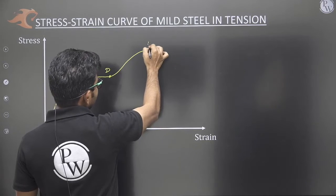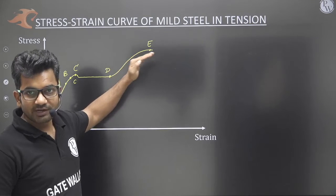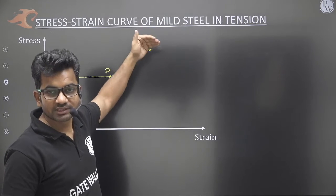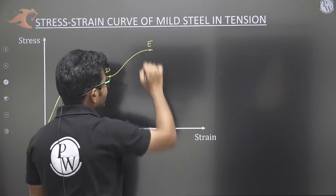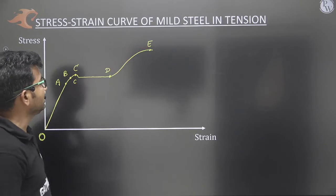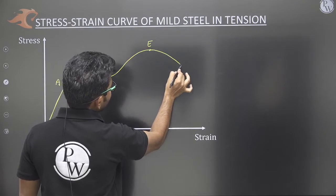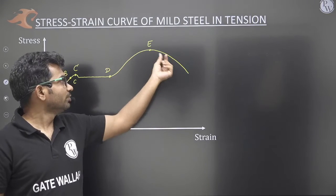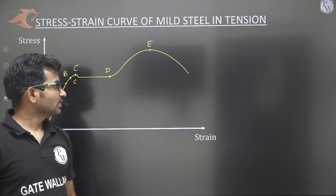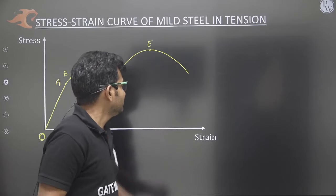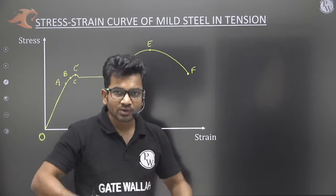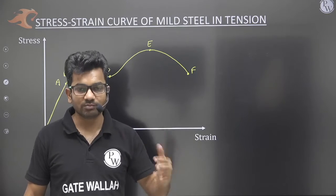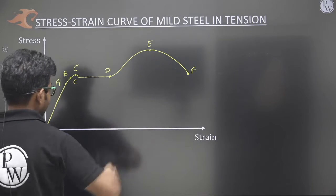The strain hardening continues up to point E, which is called the ultimate point — the highest stress the material can be loaded to. Beyond this stress, the material cannot bear any more load. After the ultimate point is reached, there is a drop in stress; the material starts to soften, stress reduces while strain keeps increasing. The material takes less load but keeps elongating until point F, which is the fracture point, also called the breaking point or rupture point.